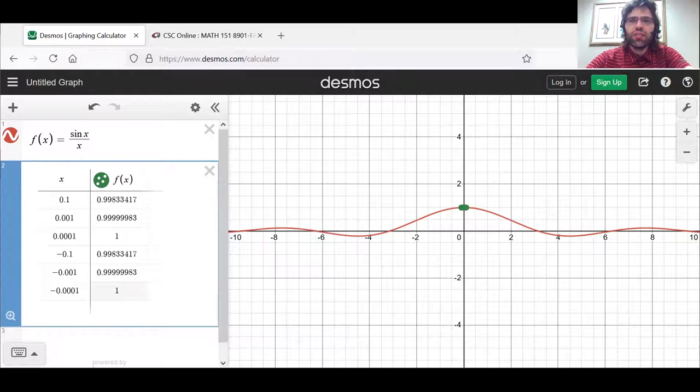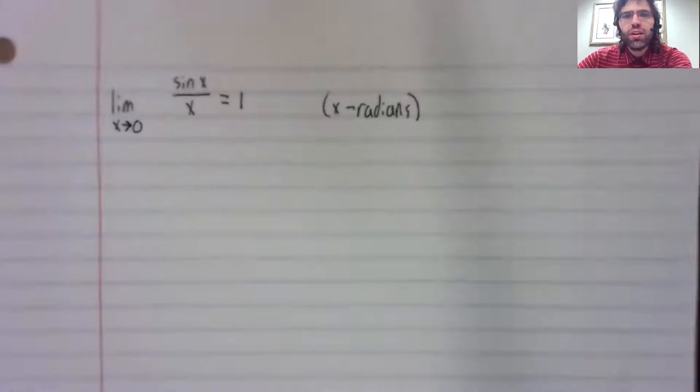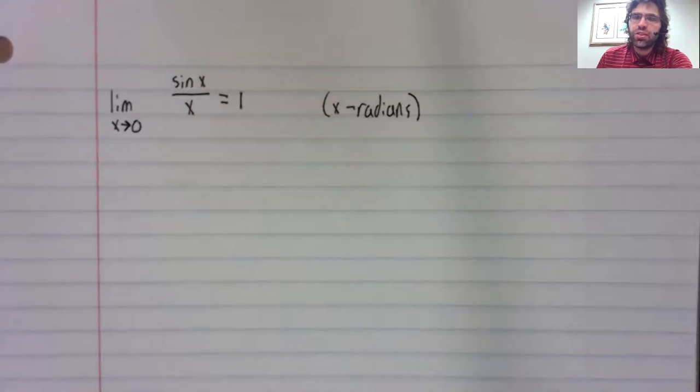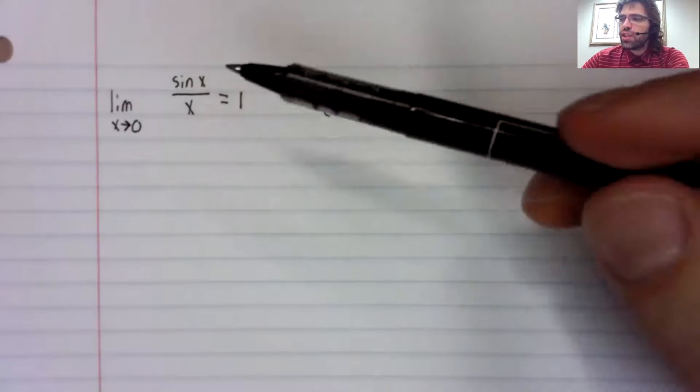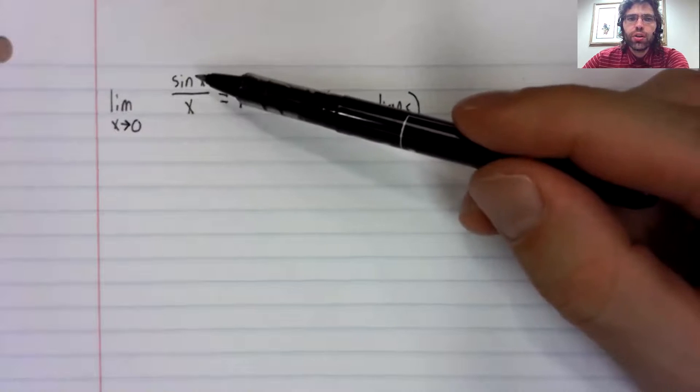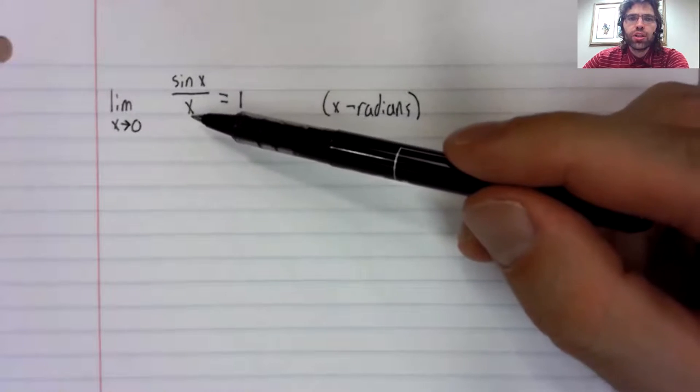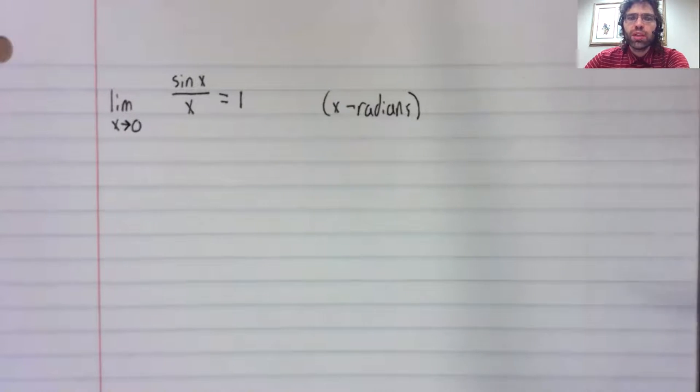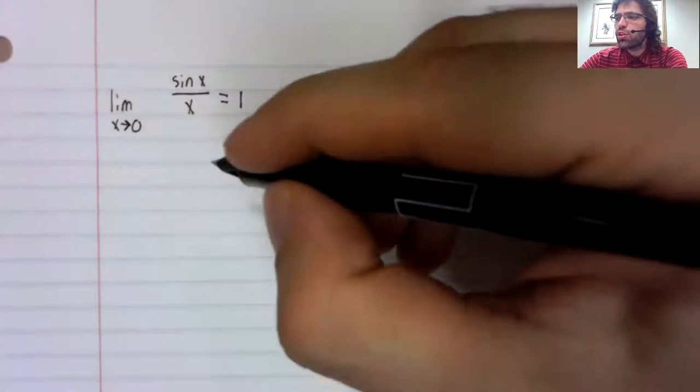What's the significance of this limit? The significance of this limit is that if a fraction is close to one, the numerator and the denominator must be very close.